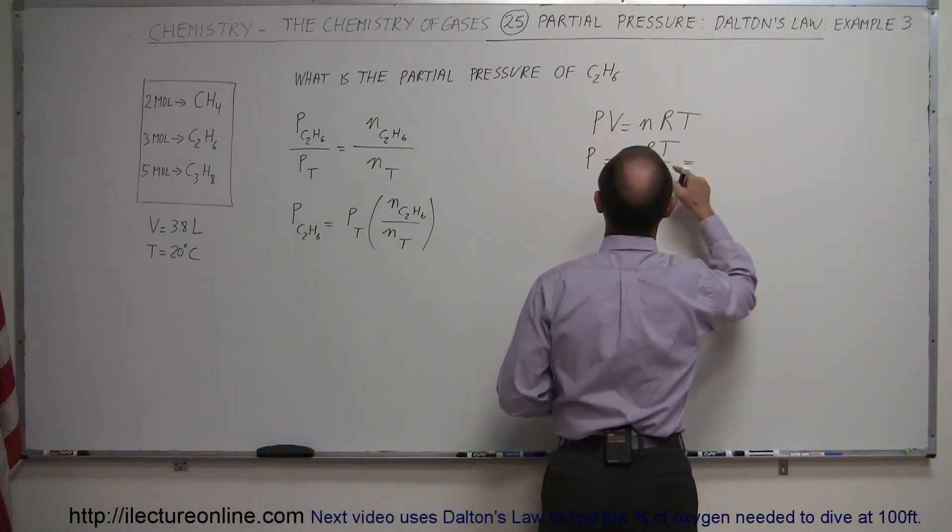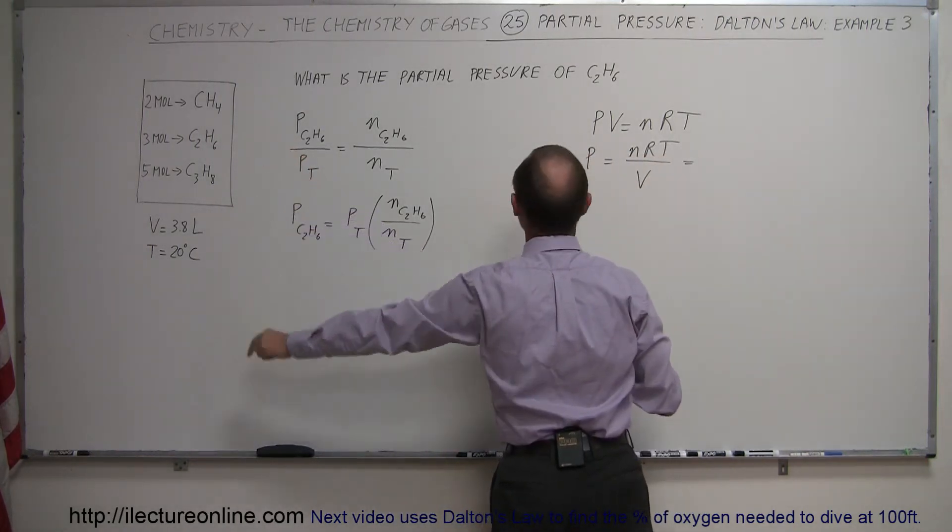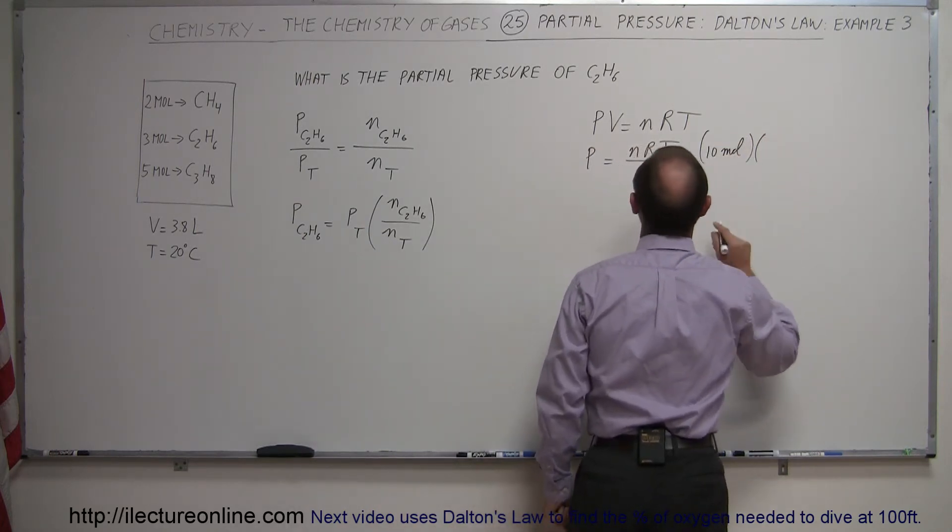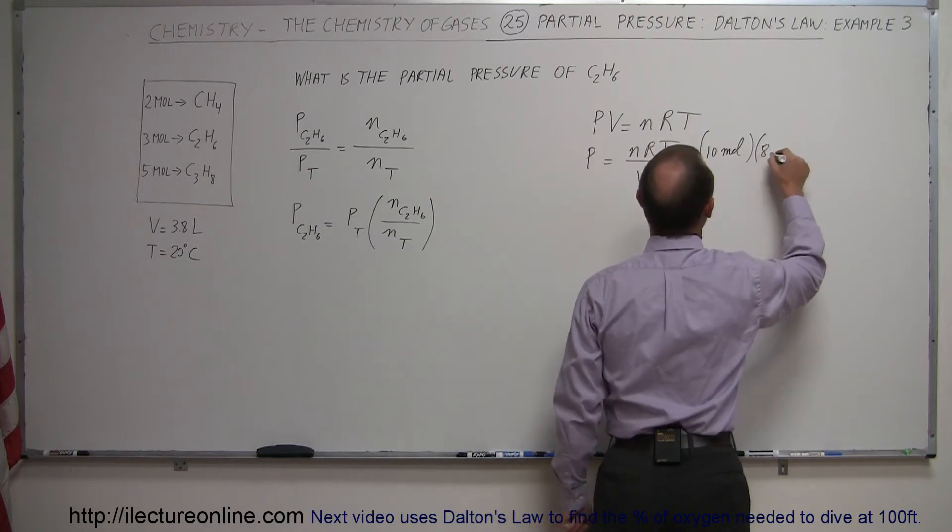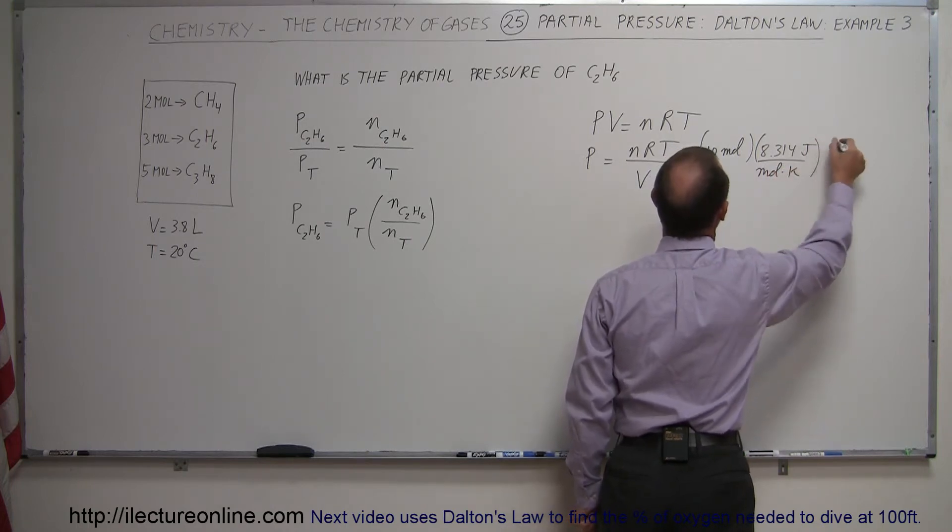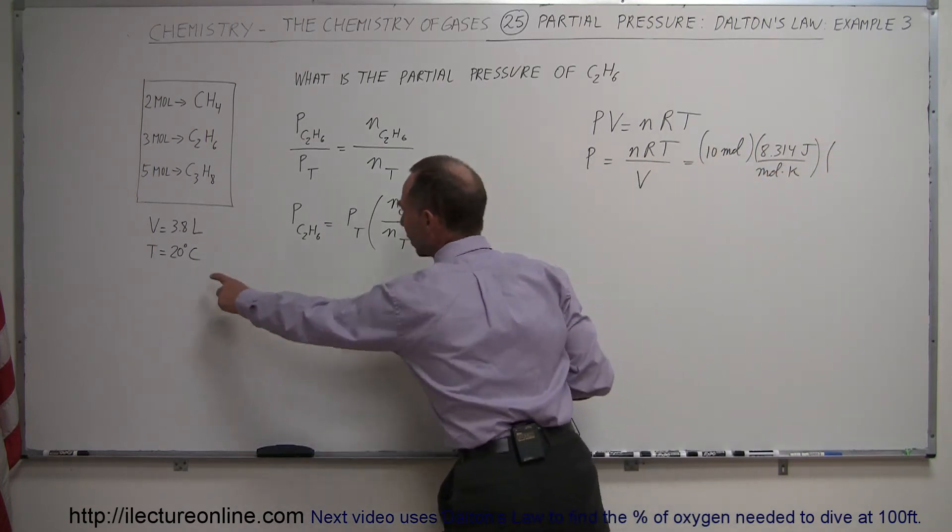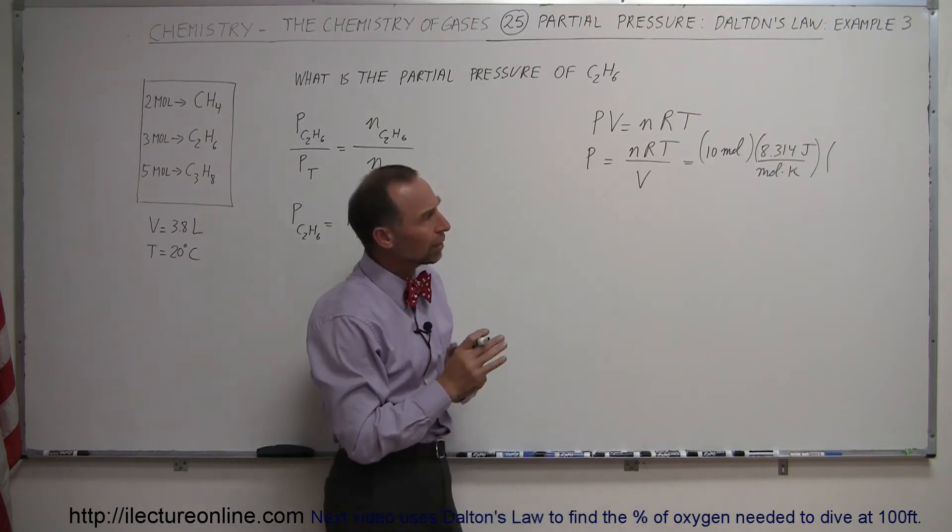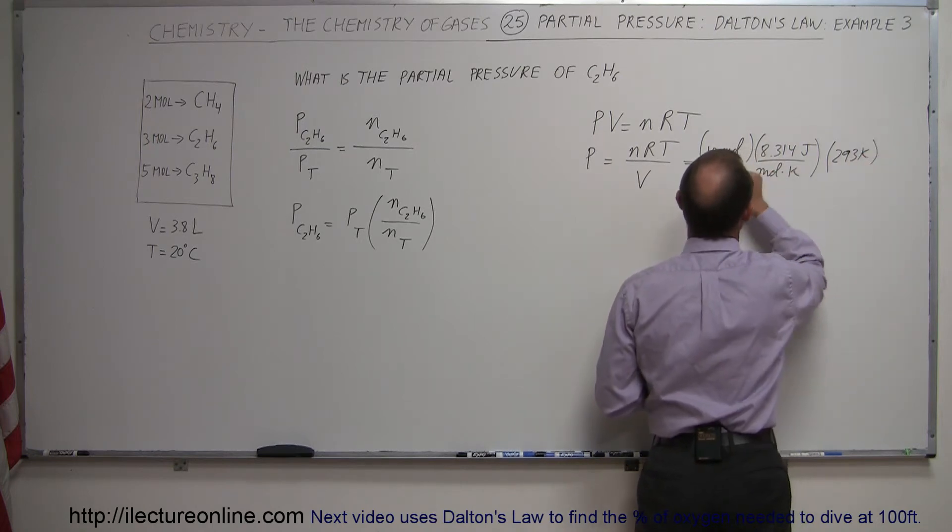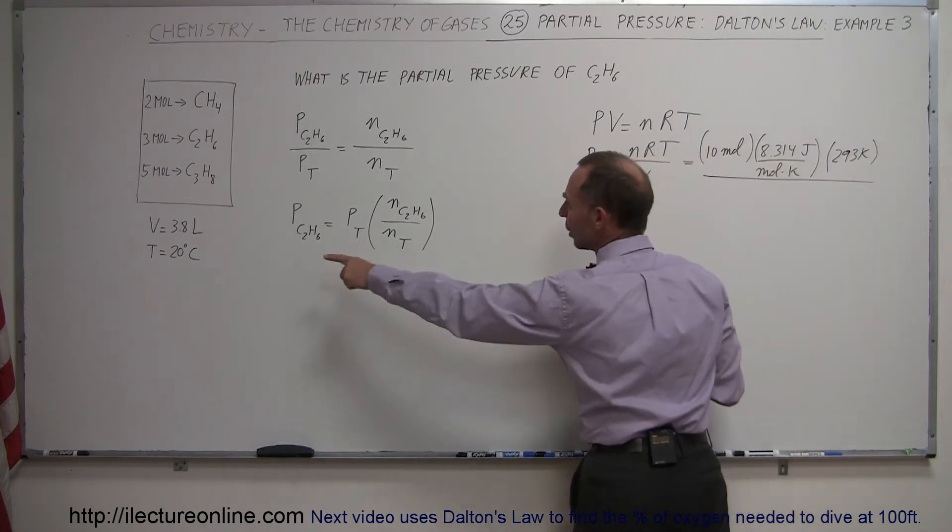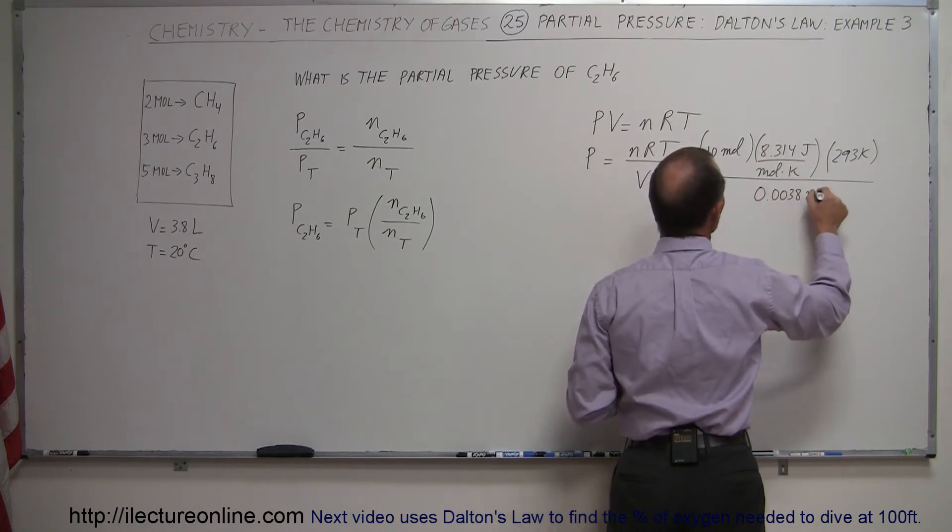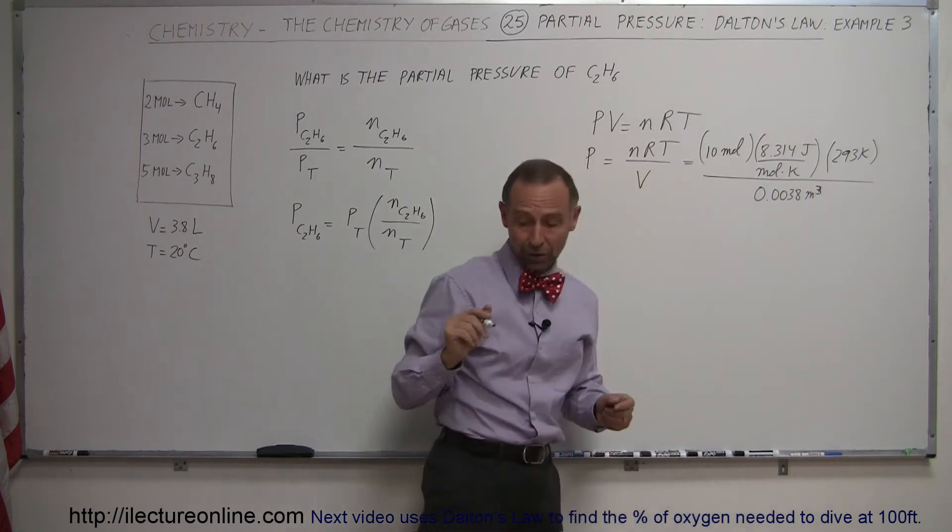First, the total number of moles: 2 plus 3 plus 5 equals 10 moles. Multiply times the gas constant which is 8.314 joules per mole times Kelvin. The temperature is 20 degrees centigrade, so we add 273 to get 293 Kelvin. And the whole thing divided by the volume, 3.8 liters converted to cubic meters is 0.0038 cubic meters.